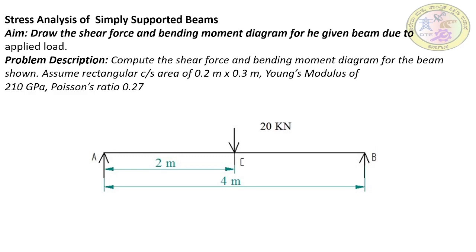Hello everyone and welcome to the ANSYS tutorial. In today's session we are discussing stress analysis of a simply supported beam. The problem description is to compute the shear force and bending moment diagram for the beam shown. Assume a rectangular cross-section of 0.2 by 0.3 meter, Young's modulus of 210 GPa, which is 210×10³ N/mm², and Poisson's ratio of 0.27. The simply supported beam is 4 meters long with a point load of 20 kilonewton exactly at the center.